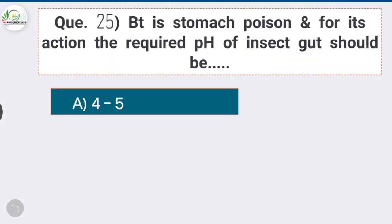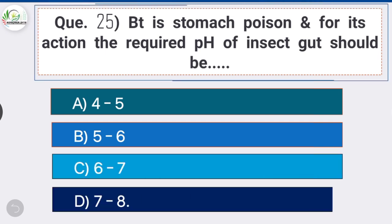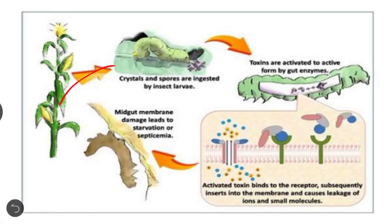Question 25: Bt is a stomach poison; for its action the required pH of insect gut should be Option D, the correct answer: 7 to 8. When insect larvae eat plants containing Bt, the toxin is released and kills the larvae. The Bt toxin dissolves in the high pH (7 to 8) insect gut and becomes active, attacking gut cells by punching holes in the lining. Bt spores then spill out of the gut and cause death within a couple of days.